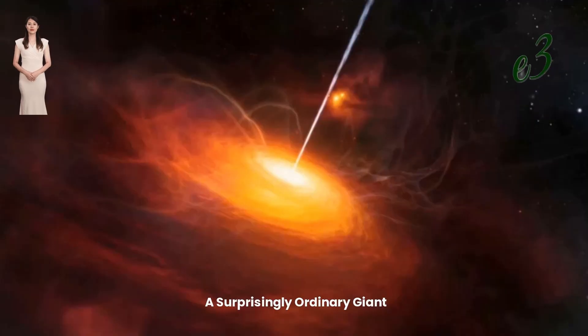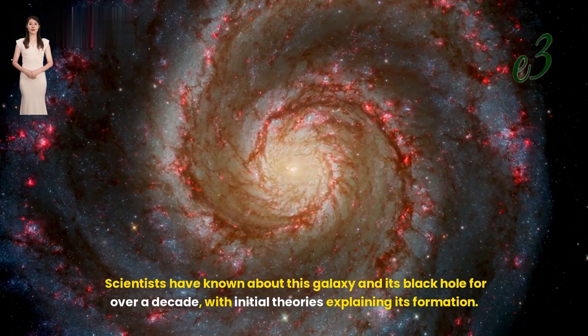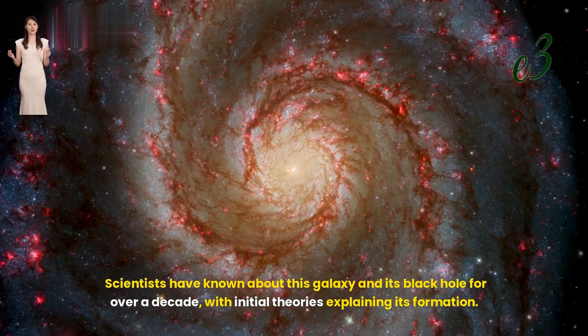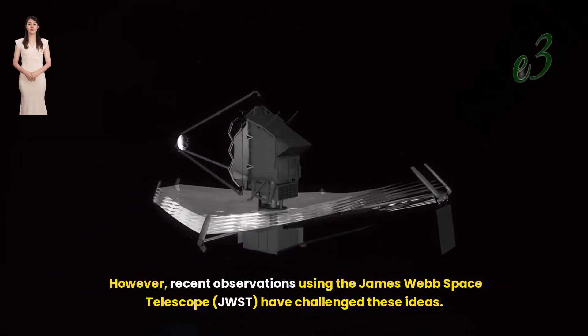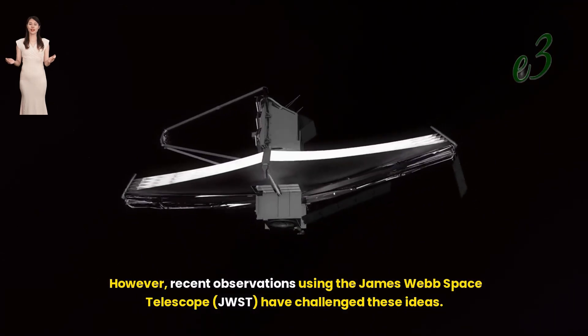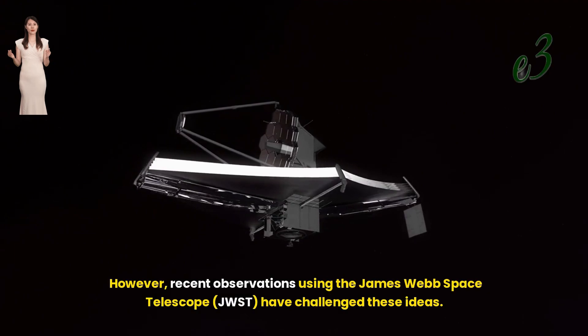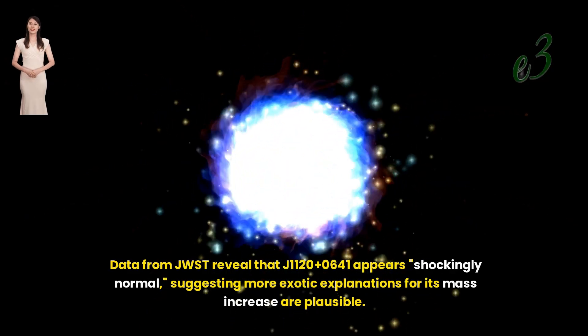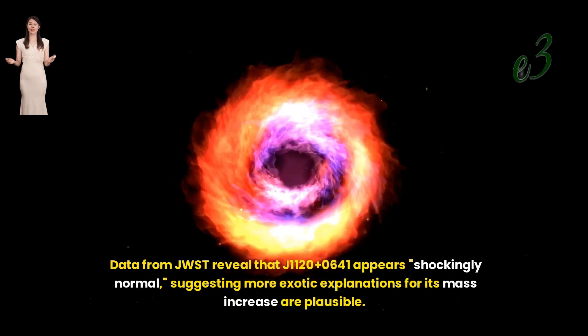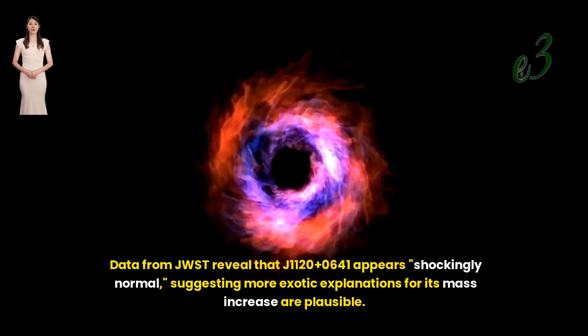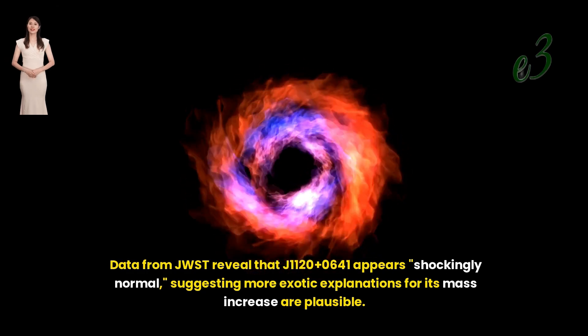A surprisingly ordinary giant. Scientists have known about this galaxy and its black hole for over a decade, with initial theories explaining its formation. However, recent observations using the James Webb Space Telescope (JWST) have challenged these ideas. Data from JWST reveal that J1120+0641 appears shockingly normal, suggesting more exotic explanations for its mass increase are plausible.